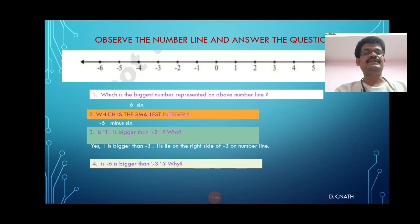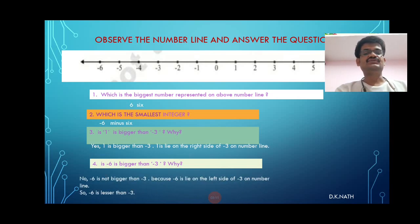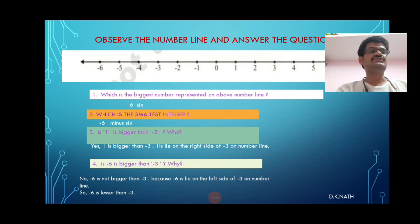1 is bigger than minus 3 because 1 lies on the right side of minus 3 on the number line. Is minus 6 bigger than minus 3? No, minus 6 is not bigger than minus 3, because minus 6 lies on the left side of minus 3 on the number line. So minus 6 is lesser than minus 3.